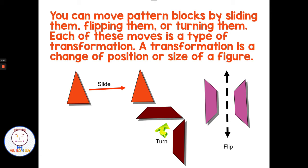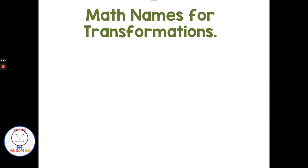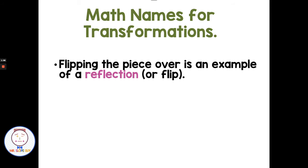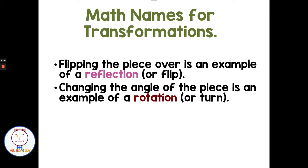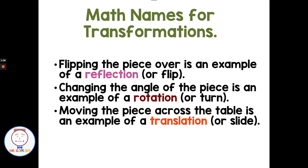Or I take a polygon and I just turn it around a given point — that is a type of transformation. So we have slides, flips, and turns, and they actually have math names. A flip — taking a piece and flipping it over — would be a reflection. If I change the angle, turning or spinning it around a given point, that's a rotation. And moving a piece across the table, sliding it across your desk, is a translation. So under the big umbrella of transformations: reflections are flips, rotations are turns, and translations are slides.